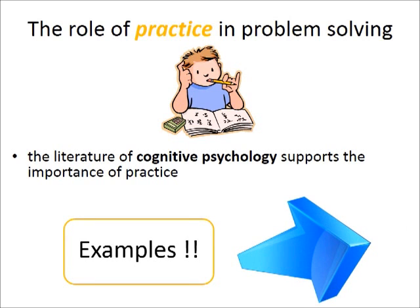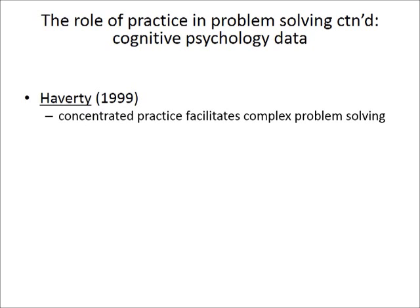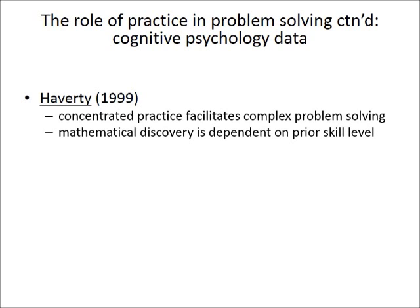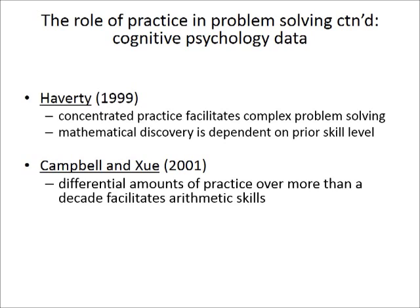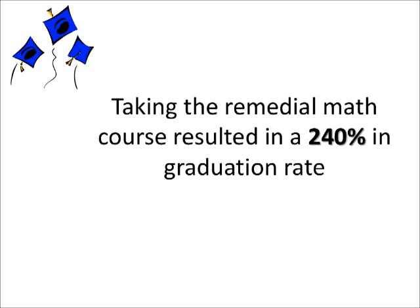Let's look at two examples from the literature. Haverti in 1999 reports that concentrated practice facilitates complex problem solving, and that mathematical discovery is dependent on prior skill level. Skill development is usually a consequence of practice over time, and results in both the availability and speedy access to known facts and procedures. Gamble and Zoo report that differential amounts of practice over more than a decade facilitate arithmetic skills, and that early practice in single-digit arithmetic leads to faster access to basic facts. By applying principles of cognitive psychology to math, Memorial University helped students in the course increase their graduation rate by 240%. Thank you, cognitive psychology!